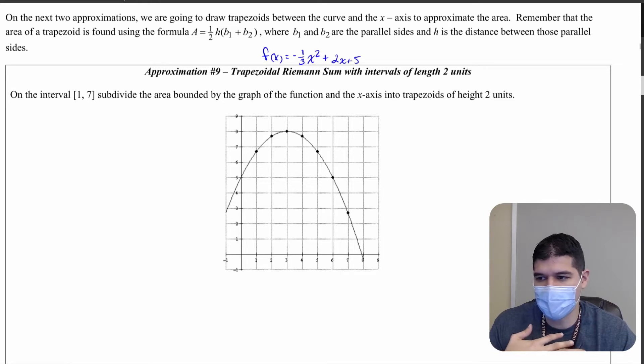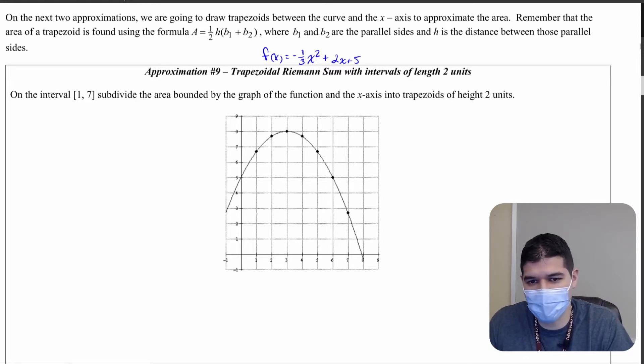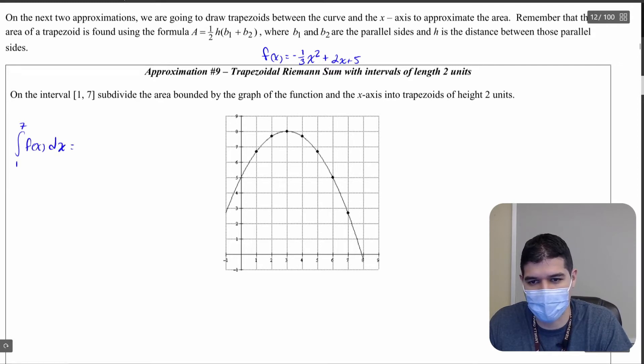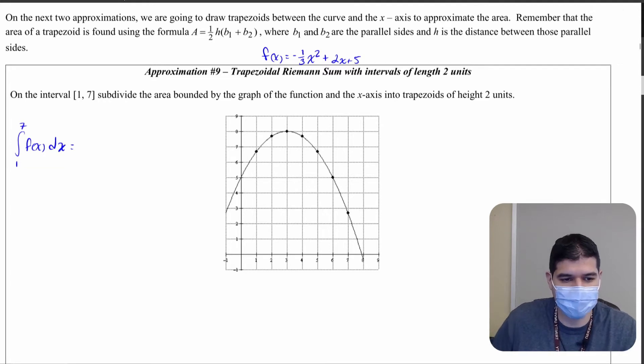So what we're going to do here is basically a trapezoidal sum is a connection between left and right hand Riemann sums. What I want to do is find the calculation from one to seven of f(x) dx, the integral for that, and in order to do that we're going to use a height of two units.